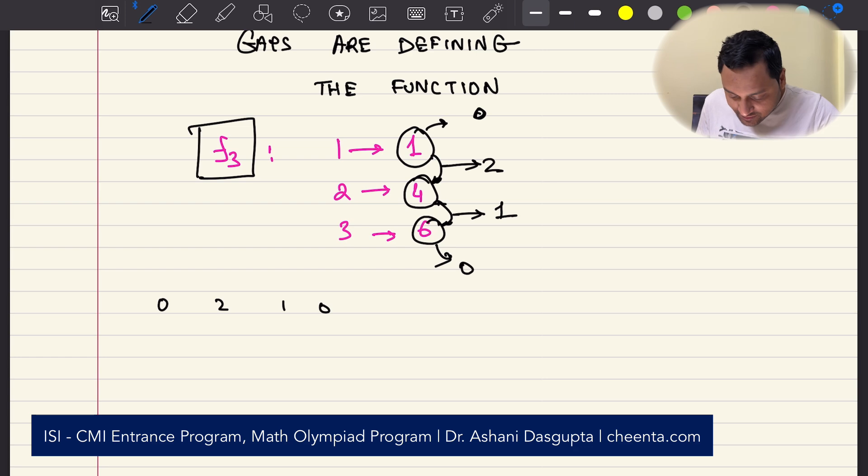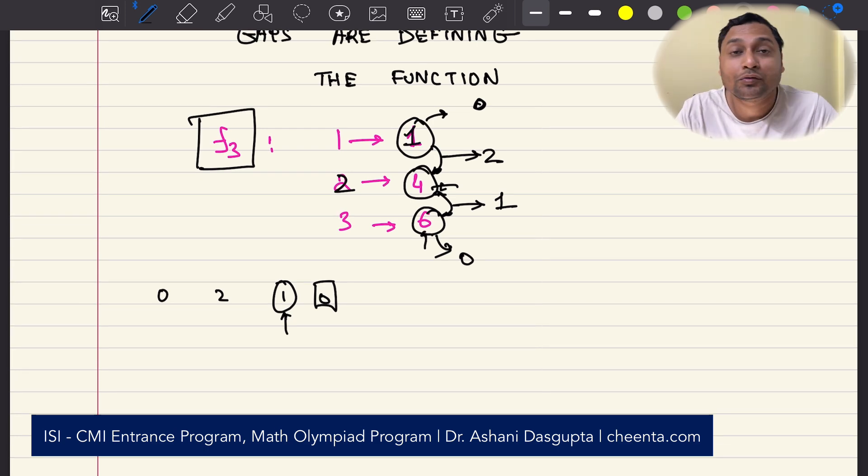One way you can think about it is you can start from the last gap information, which is 0. So, you know that the last output must be 6. Then, you move 1 unit to the left. So, you move across 1 element because that's the number of elements in that gap. Then, you put 4. 2 goes to 4. And then, you take 2 hops. You go 2 steps to the left. So, you get the final output, which is 1. So, the gap information completely defines the function. That's what we realize while working through enumerating the miniature problem.